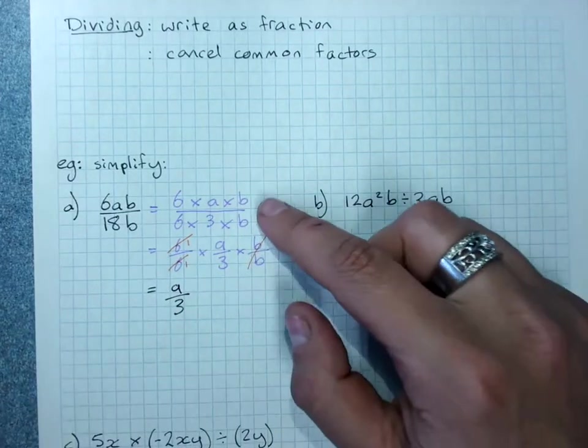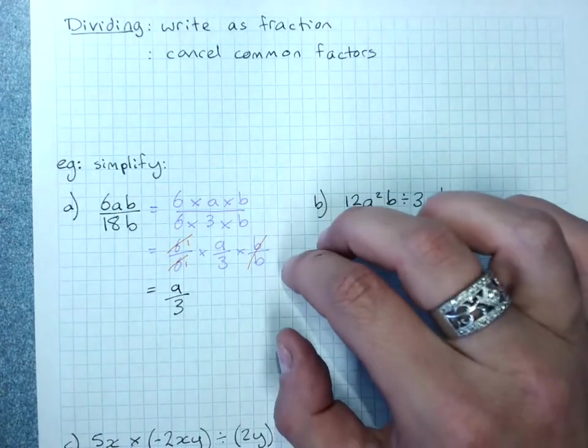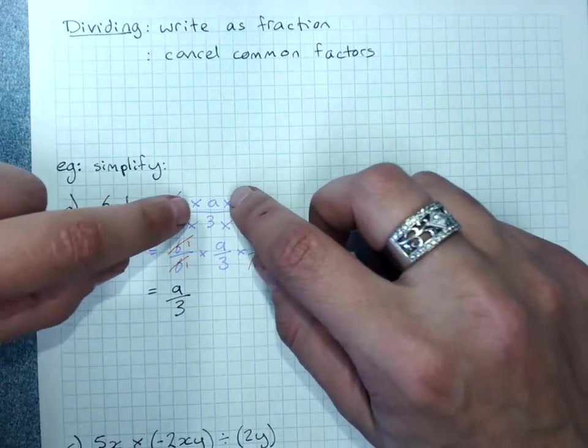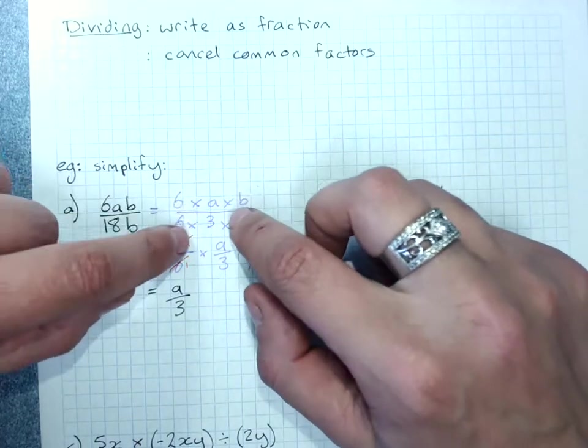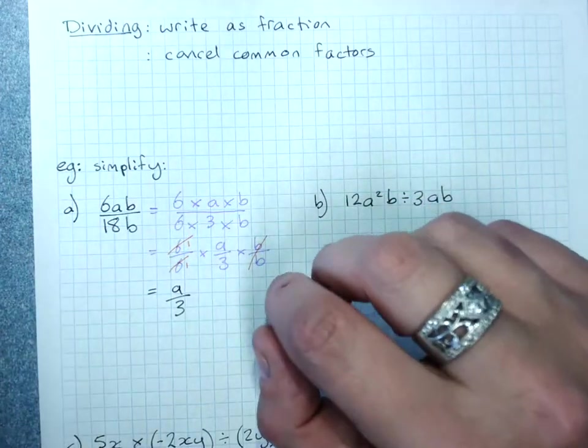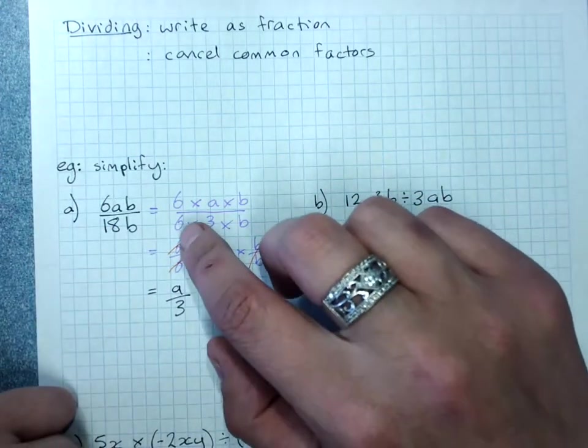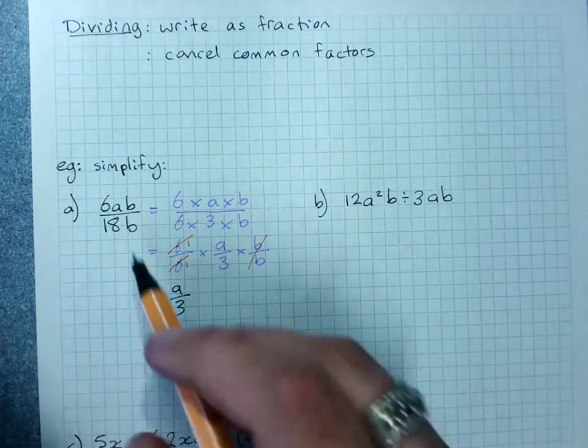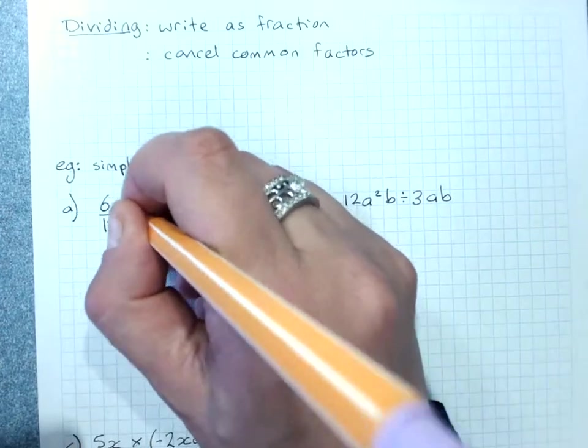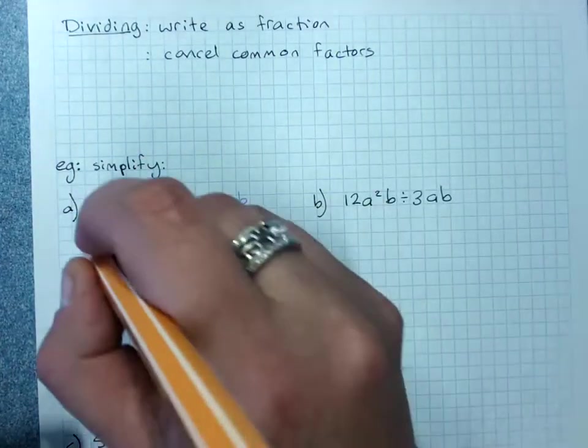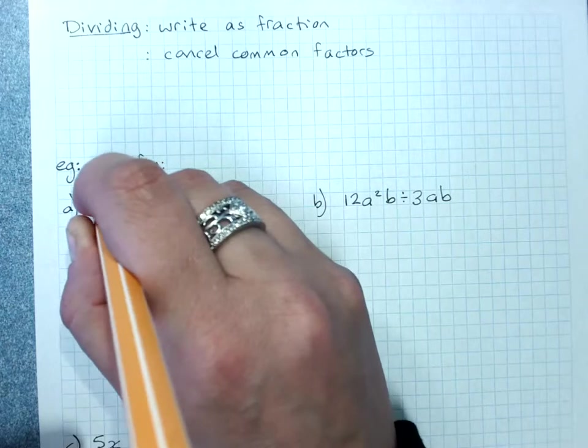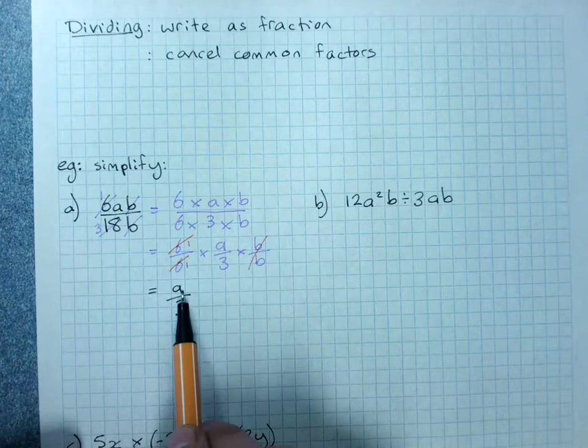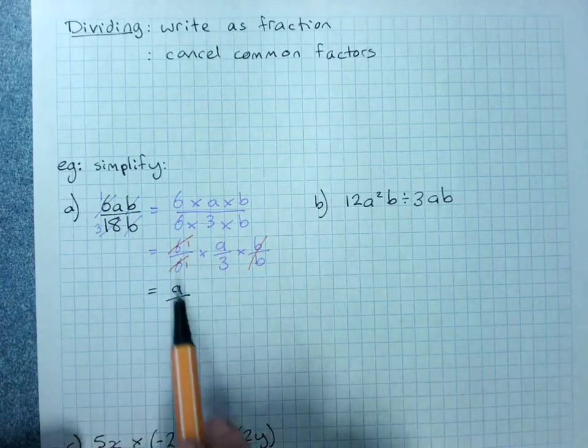Now, we don't have to do this working. This is showing you how it works. But if you get stuck, do it. This does not work with plus signs or minus signs on top or bottom of a fraction. It only works with factors because multiplying by 1 doesn't change anything. If I'd wanted to do this straight here, I would cancel the b at the top and bottom and divide top and bottom by 6. 6 divided by 6 is 1, 18 divided by 6 is 3. 1 times a is a, 3 times 1 is 3.